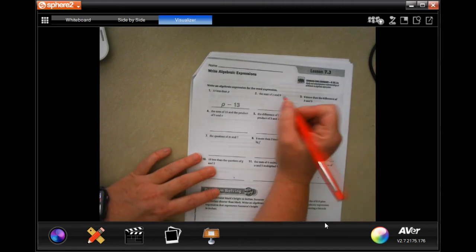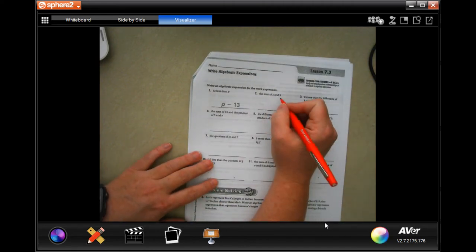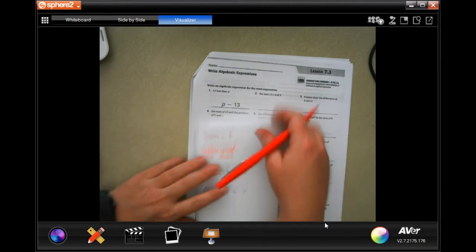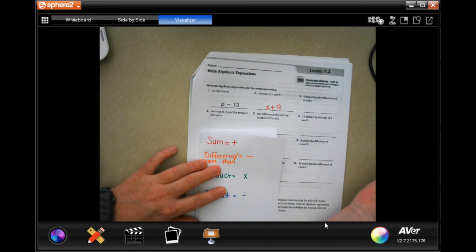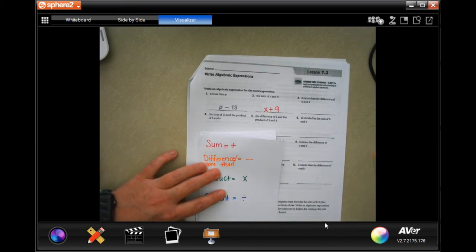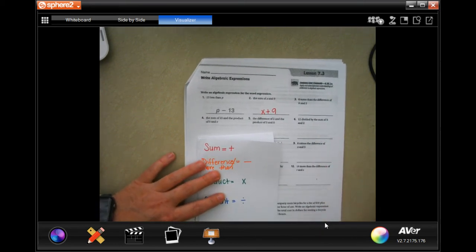Number two says the sum of X and nine. Well, we use our little cheat sheets and sum is plus. It doesn't want us to solve it, just wants us to write the expression.